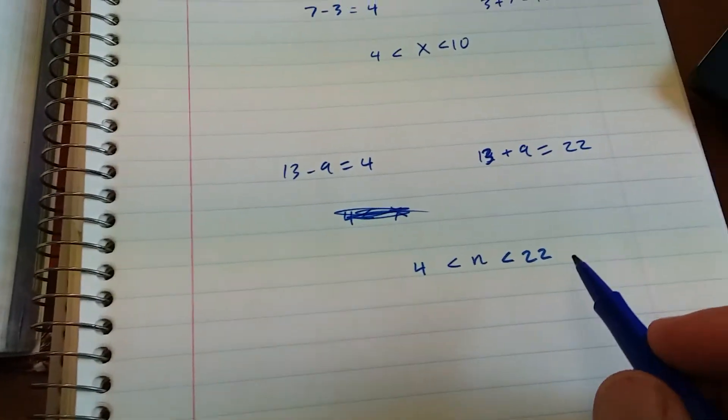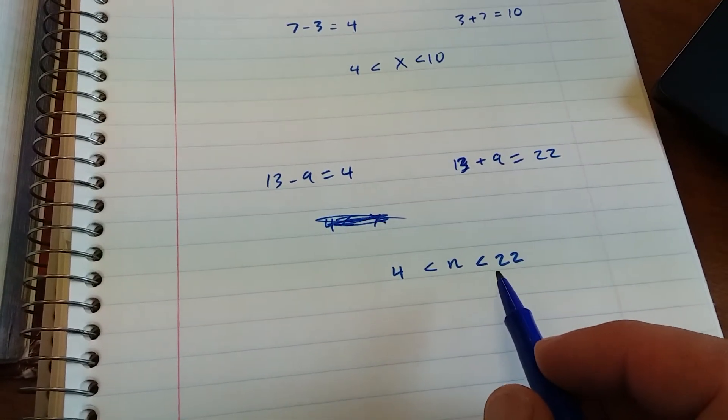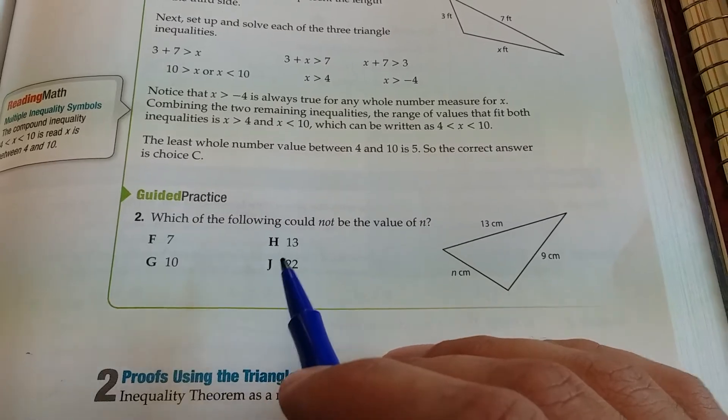J, twenty-two is not in our range. Twenty-two is too big. It has to be less than twenty-two. So the answer to number two here is going to be J.